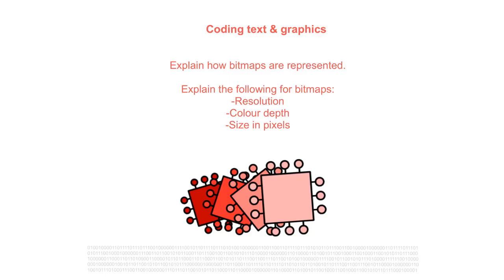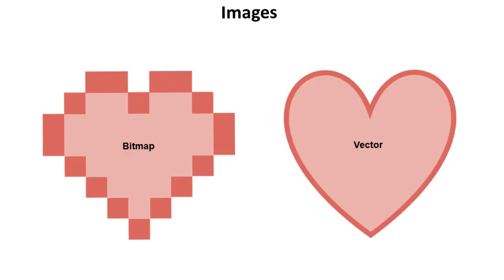In this video we're going to take a look at bitmaps and how they're represented, explaining key terms including resolution, colour depth and size in pixels. Broadly speaking, most images in computing can be stored as either bitmaps or vectors. Bitmaps use single discrete individual pixels of colour that make up an image, whereas a vector uses lists of information and mathematical equations to draw an image based on the data.